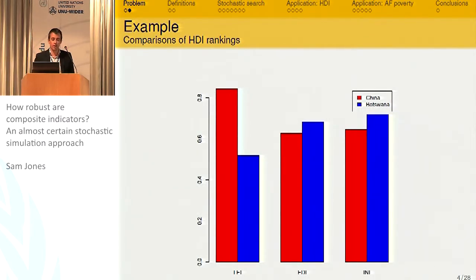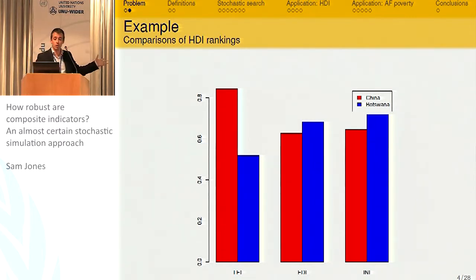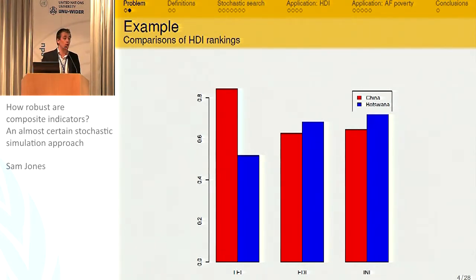Let me clarify that just to fix ideas. This is the human development indicators for two countries, China and Botswana. There are three dimensions: life expectancy, education, and income. China clearly outperforms Botswana on life expectancy, but on education and income, Botswana marginally outperforms China. So clearly, depending on how we weight these different dimensions, we might come to a different conclusion about which country has a higher level of development.